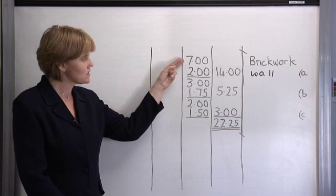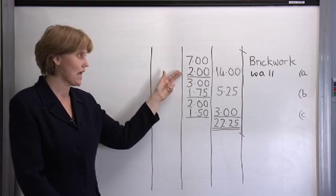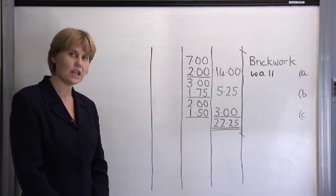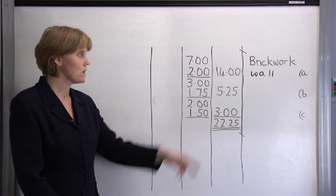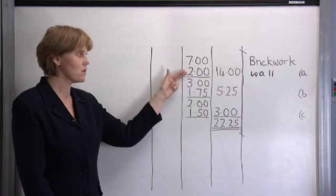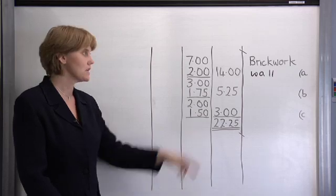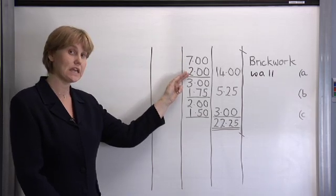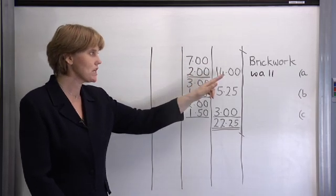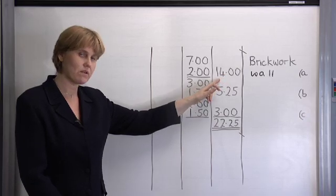So let's look again at section A. To work out the total area for section A we multiply the length by the width. So we're saying to ourselves 7 by 2 is 14 and we put the answer to that in the squaring column.